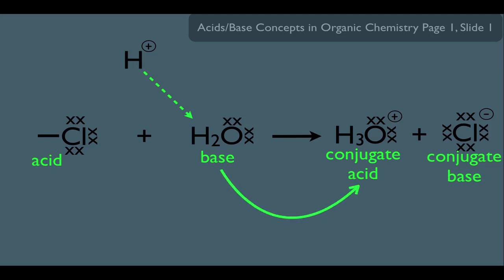To determine the conjugate acid of a base, you simply add a hydrogen to it. But remember, you're really adding H-plus, which means the overall charge of the molecule is increasing by plus one. So notice, in this case water's overall charge is zero. Giving it an H-plus now makes it H3O+. So determining the conjugate acid of something not only involves adding a hydrogen, but also increasing the overall charge by one.